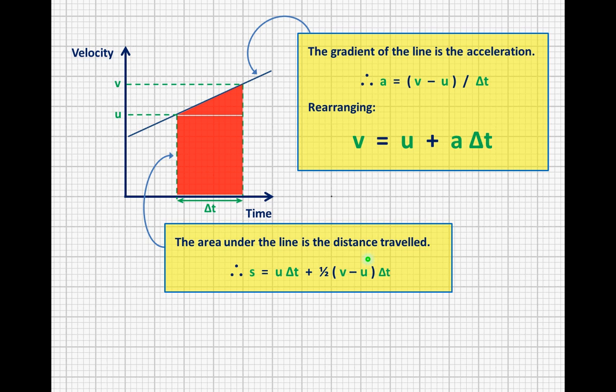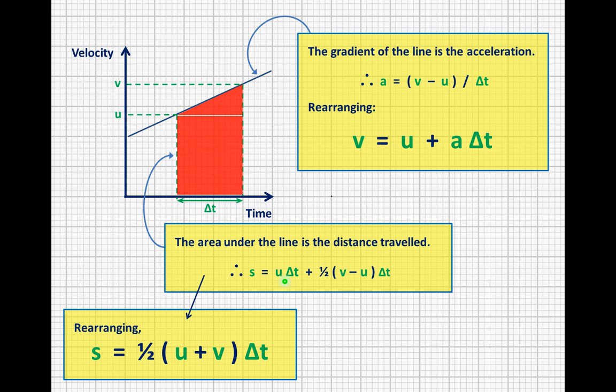This is slightly more complicated than it needs to be, as we can simplify it down. Here we've got u delta t, and we're going to subtract off half u delta t, which will just leave us with one lot of a half u delta t. And then we're also going to add on another half v delta t, which is here, a half v delta t. And this is our second equation of motion.